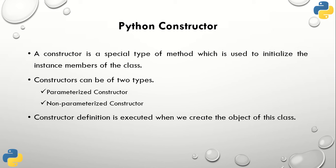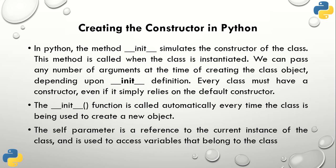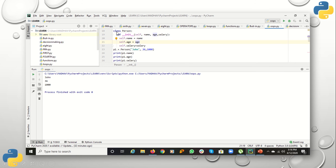There are two types of constructor: parameterized and non-parameterized. In a parameterized constructor you supply arguments; in a non-parameterized constructor you do not supply any argument. The constructor definition is executed when we create the object — as soon as the object is created. To define a constructor in Python, you define a method with the keyword '__init__' — i-n-i-t — which means 'initiate', with underscores at the front and back.